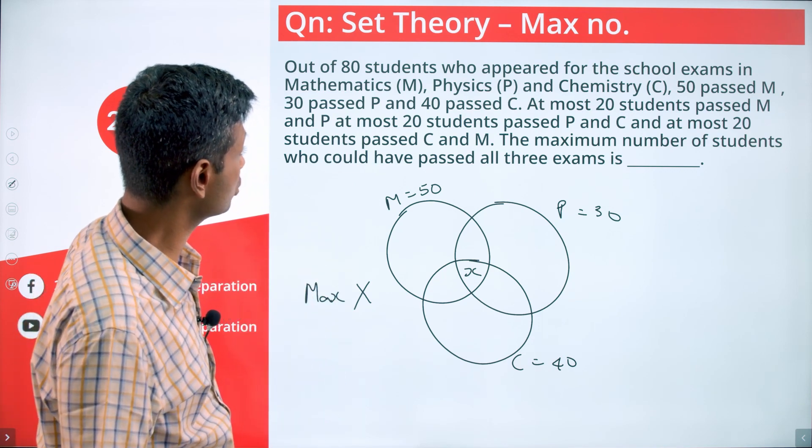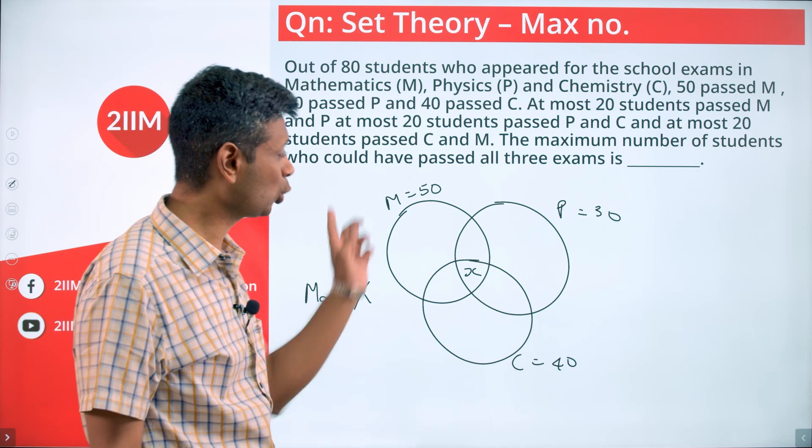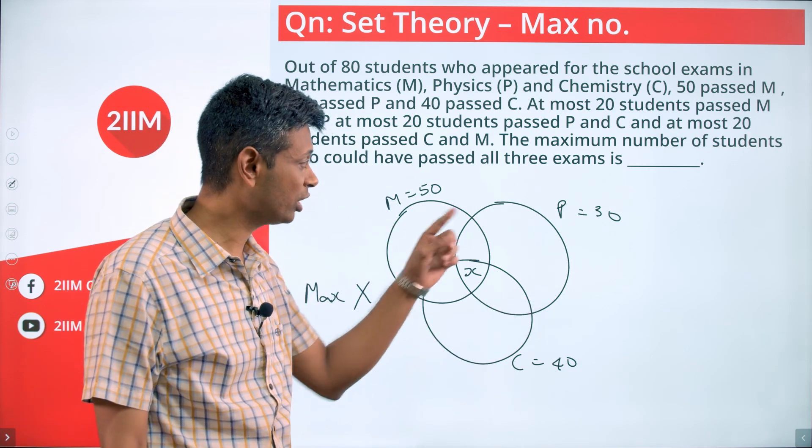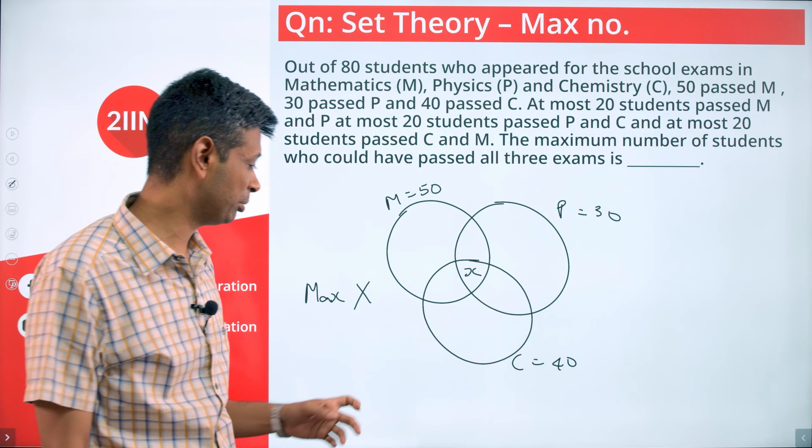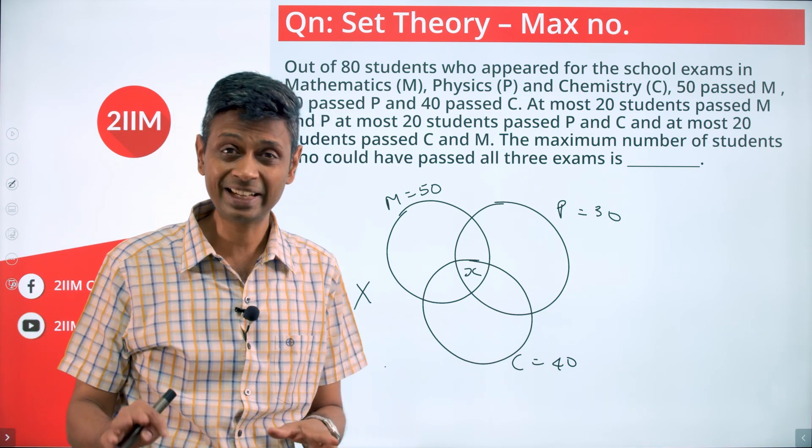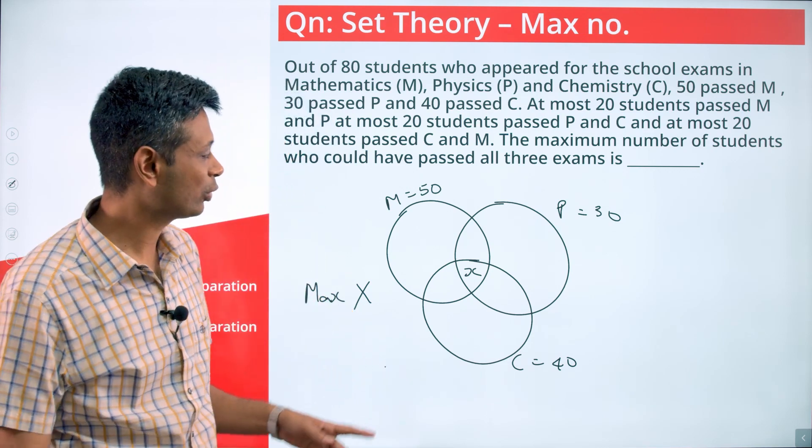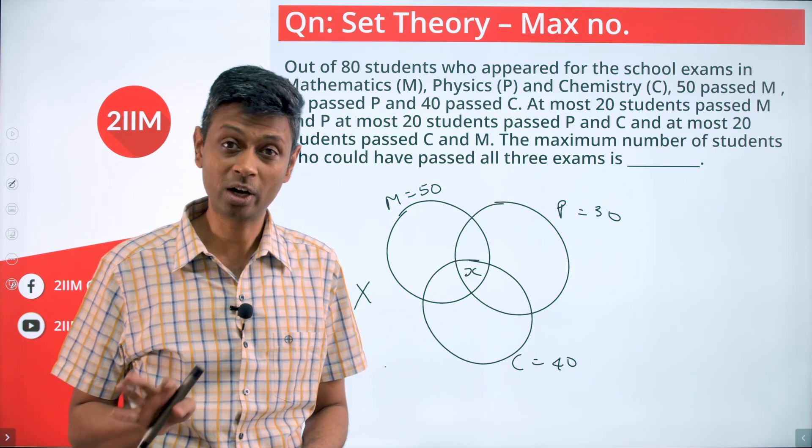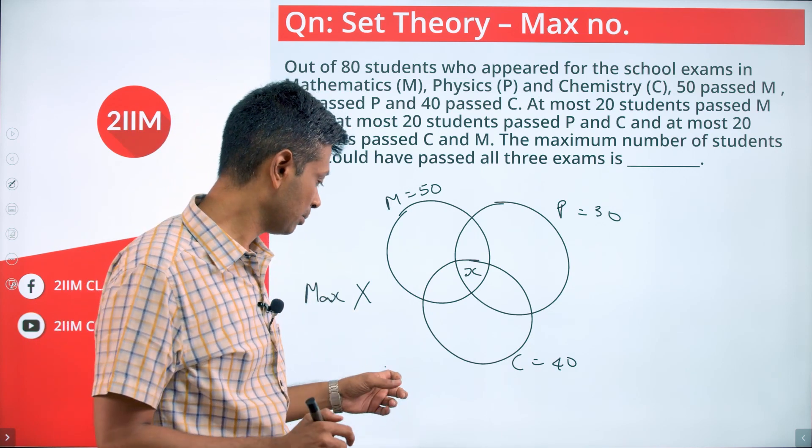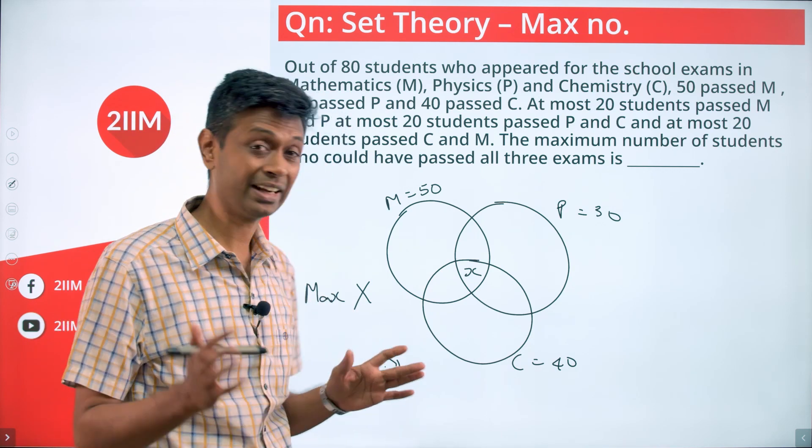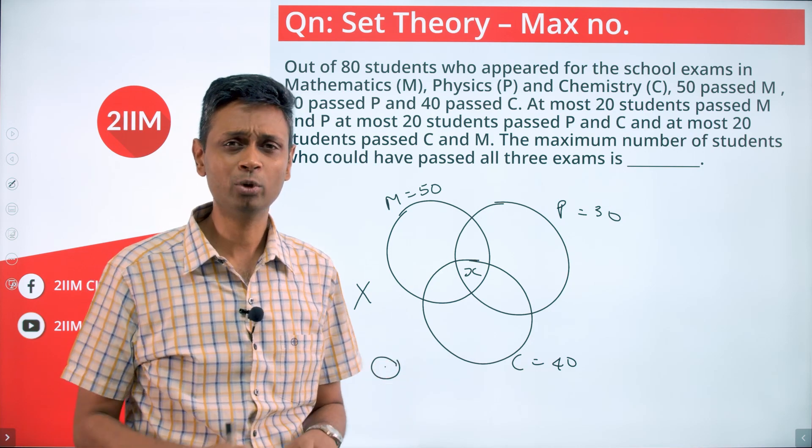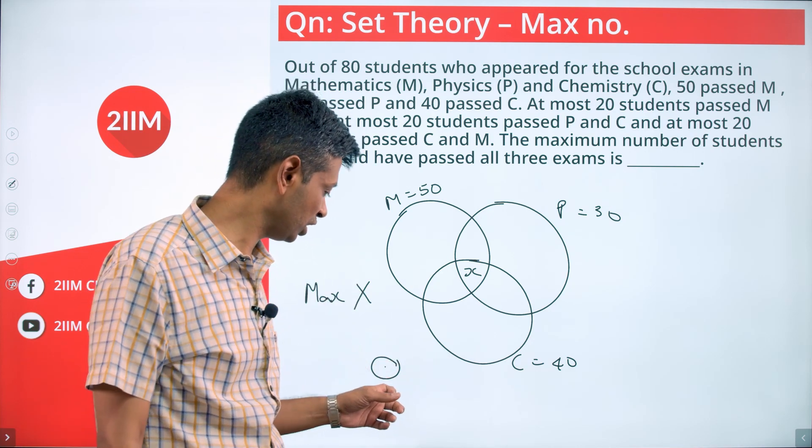Out of 80 students who appeared for school exams, assume the total is 80. M union Physics union Chemistry is 80. There could be people outside also. The total could be less than 80 technically, but we're looking to find the maximum. I think 80 will work. People who taught none of the exams is a factor for us to keep in mind. I'm going to ignore that and say let us plug it at 80, because if the numbers are here—